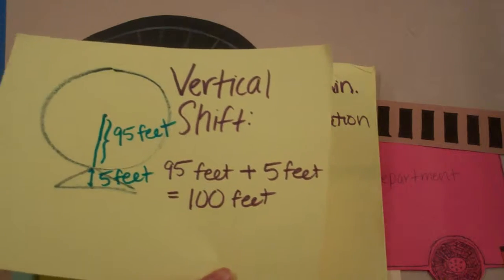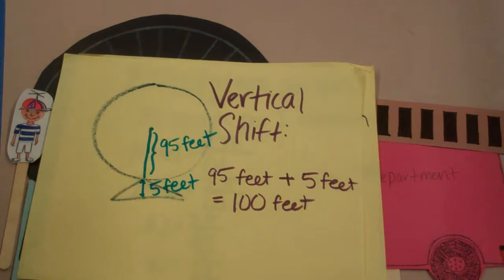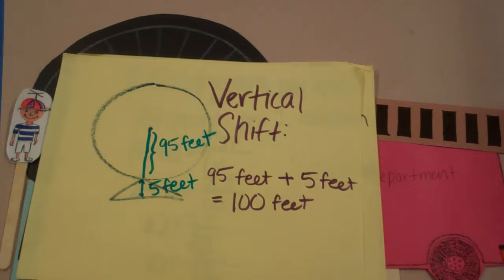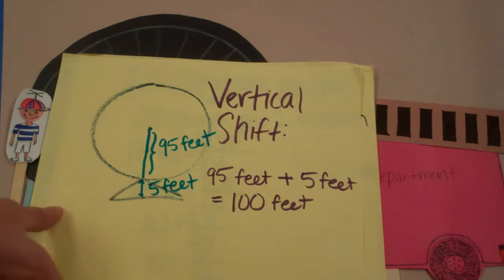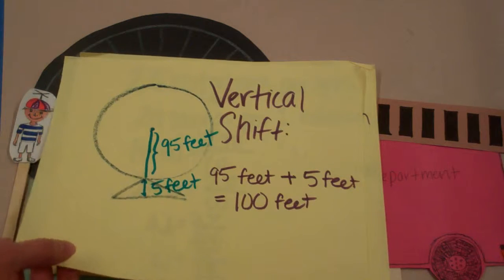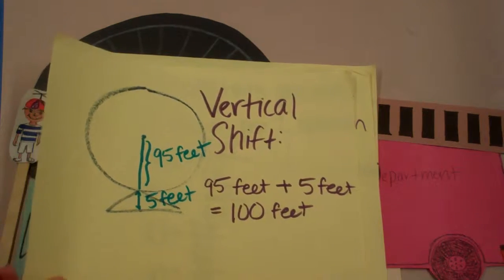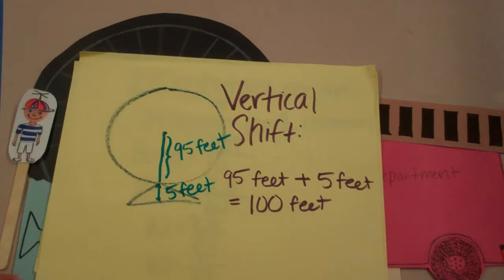In addition, because they knew that the center of the Ferris Wheel was not at ground level, there had to be an added vertical shift to the equation. The wheel of the Ferris Wheel was 5 feet off the ground, and the center of the Ferris Wheel was the length of the radius — 95 feet — from the bottom edge of the Ferris Wheel. Thus, the total height of the center of the Ferris Wheel from the ground is 95 feet plus 5 feet, or 100 feet.